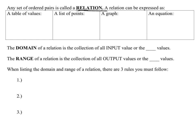A relation can be expressed in four different ways. First, we can express a relation in a table of values. So if I have an x-y chart with a bunch of ordered pairs like (3, 4), (0, 8), and (-3, 2), that is considered a relation.